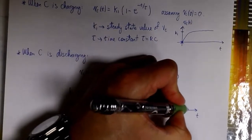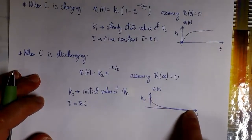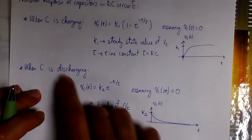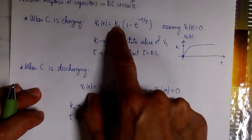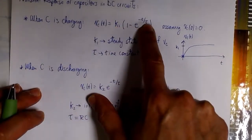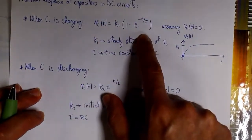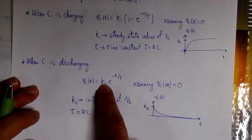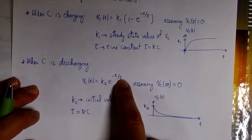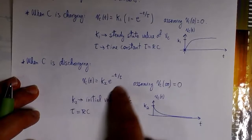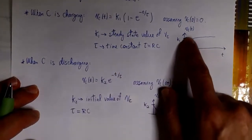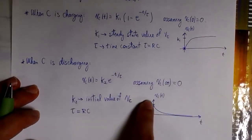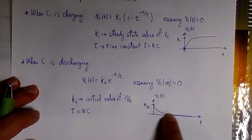So the behavior is like this. When the capacitor is charging, that's the equation we use. And when the capacitor is discharging, that's the other equation we have to use. We basically need two things: constant k1 and tau when it is charging, and constant k2 and tau when it is discharging.